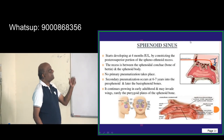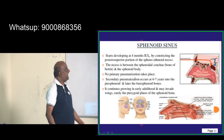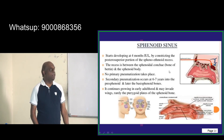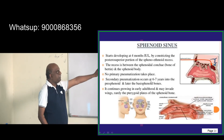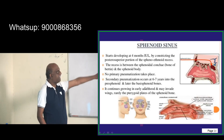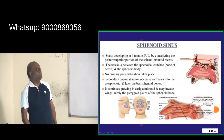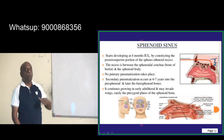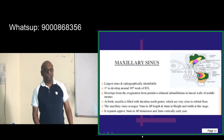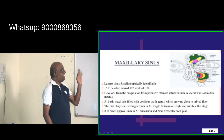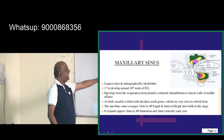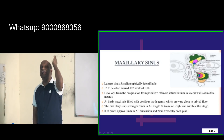For the sphenoid sinus, there is no primary pneumatization. Secondary pneumatization occurs at 6 to 7 years into the pre-sphenoid and later the basi-sphenoid bones. The maxillary sinus starts developing at the 4th month of intrauterine life and is the largest sinus of all.